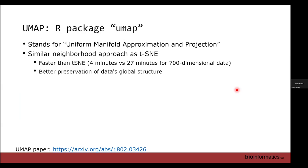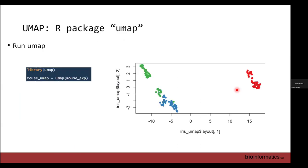UMAP also preserves global data structure better than t-SNE. If there are similar cell types belonging to similar groups, UMAP shows them closer together but also better separated — potentially showing finer separation where t-SNE might lump them into one group. In R, the function is called umap from the umap package. We'll see in the labs what UMAP does and how to plot it.